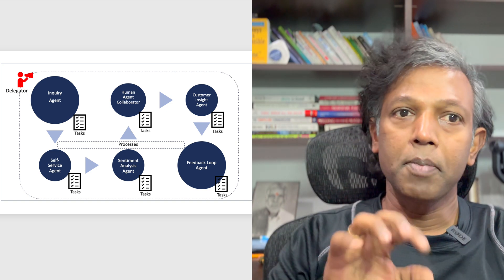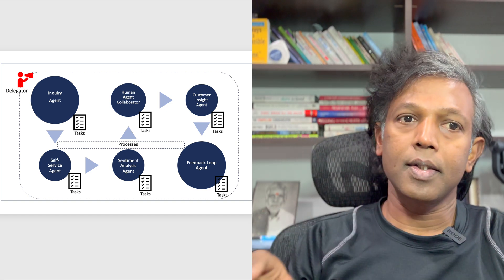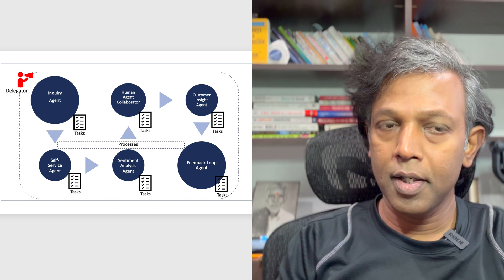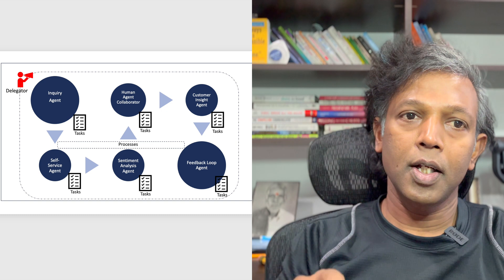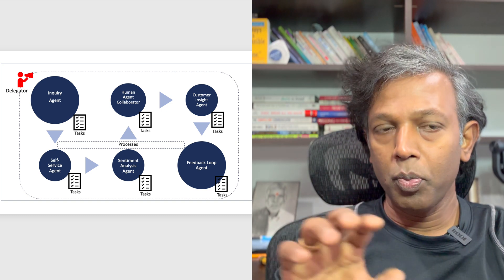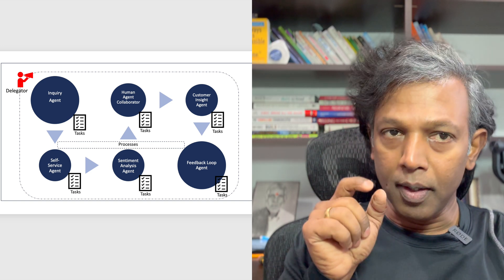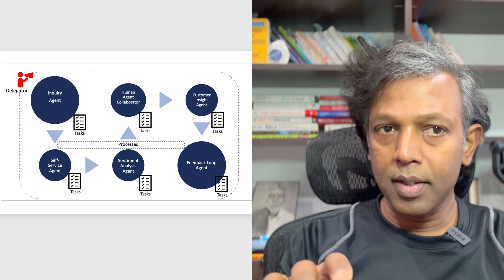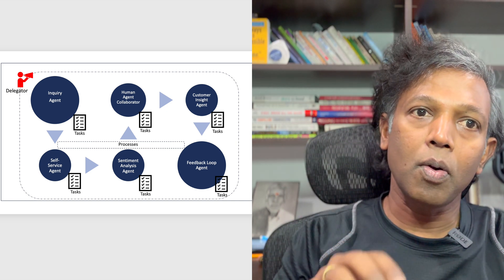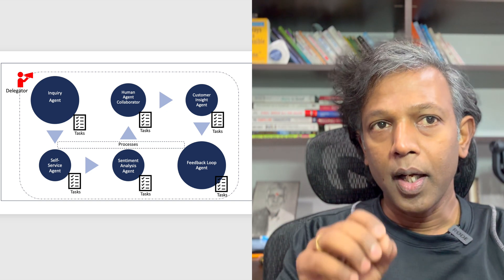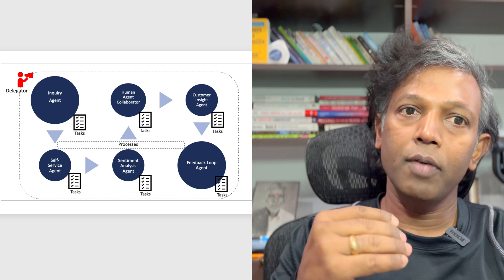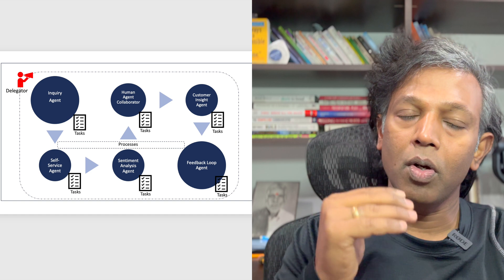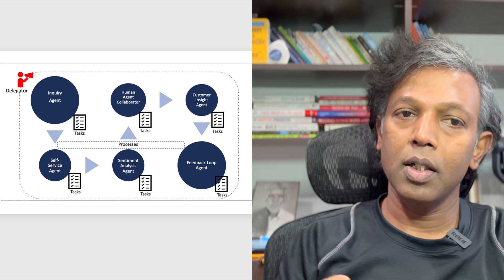This is how the multi-agent system works. You build these separated small agents — inquiry agent, self-service agent, sentiment analysis agent, billing agent, order management agent, customer insight agent, and feedback loop agent — all built with the help of the IBM BeeAI framework or CrewAI framework. These agents together form what is called a multi-agent system. Each agent, when you build it, will have a specific task to achieve, and the task is associated with the respective agent to execute.